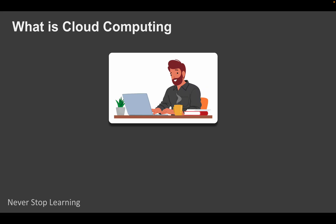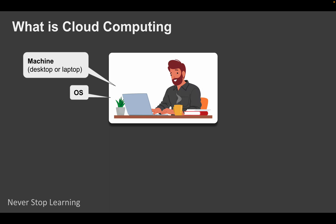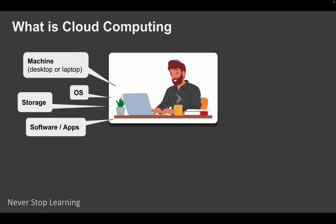Imagine you are working on your laptop or desktop at your home. To do any work, you will need some software and some hardware resources, some infrastructure. You need a machine — a desktop, laptop, or tablet — with an operating system, some storage space, and some software or applications to work with.